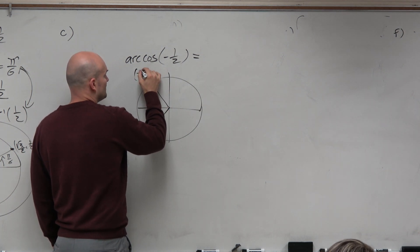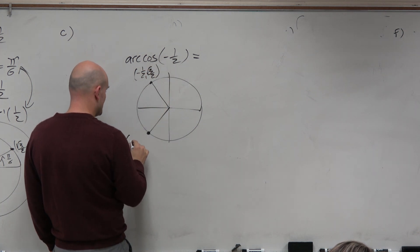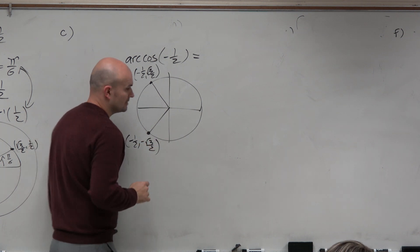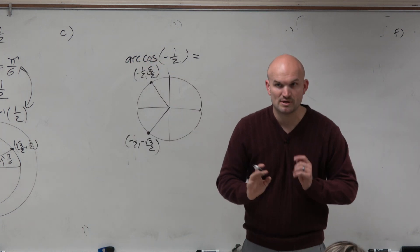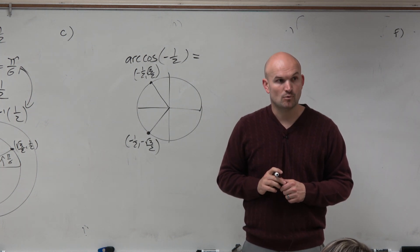This coordinate point is negative 1 half, square root of 3 over 2. And this point is negative 1 half, comma negative square root of 3 over 2. Would you agree with me? Those are the two coordinate points on the unit circle where the x-coordinate is negative 1 half.